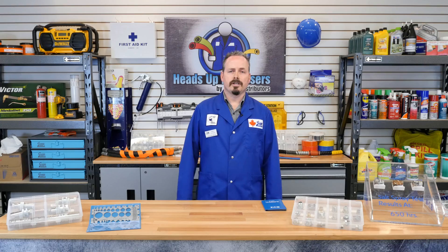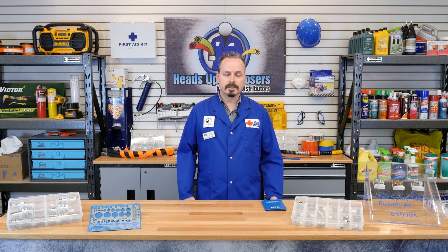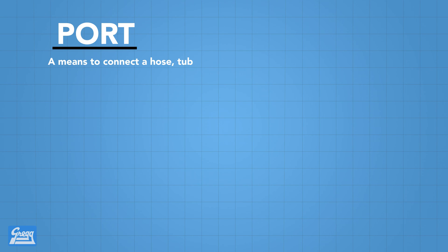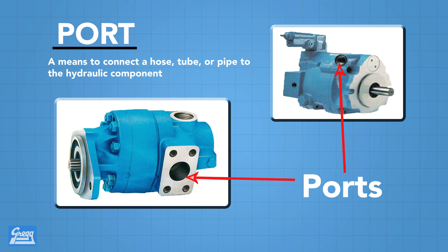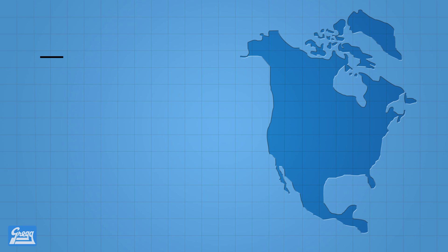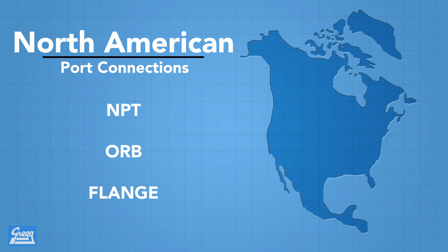Okay, that was a lot of information to digest. Now we're going to get into a little more detail on some terminology — for example, what is a port and what is a connector? A port is a means to connect a hose, tube, or pipe to the hydraulic components. Common North American port connections are NPT, ORB, and flange.